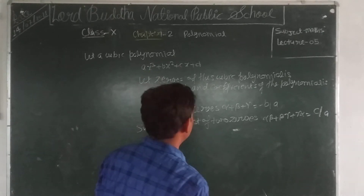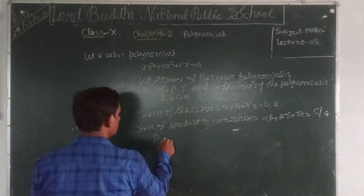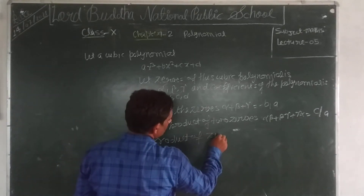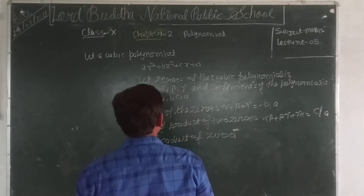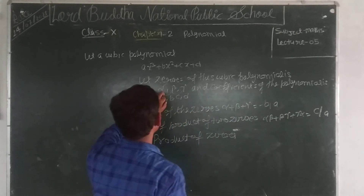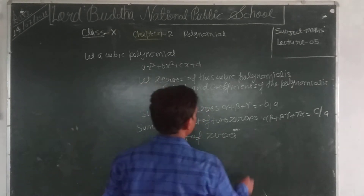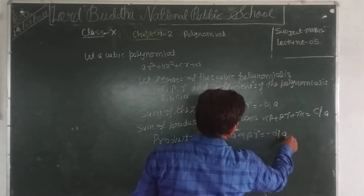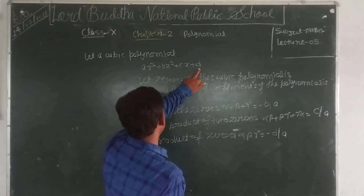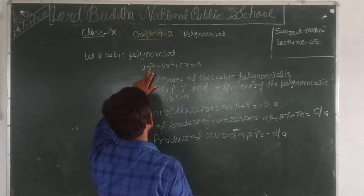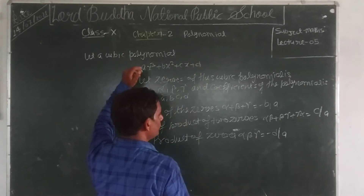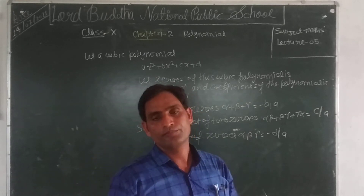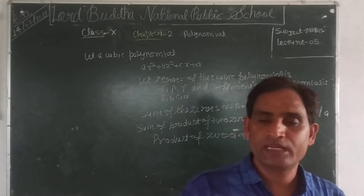Product of zeros: alpha beta gamma equals minus D upon A, that is the negative of the constant term divided by the coefficient of x³. This is the relation between the zeros and the coefficients of the cubic polynomial.